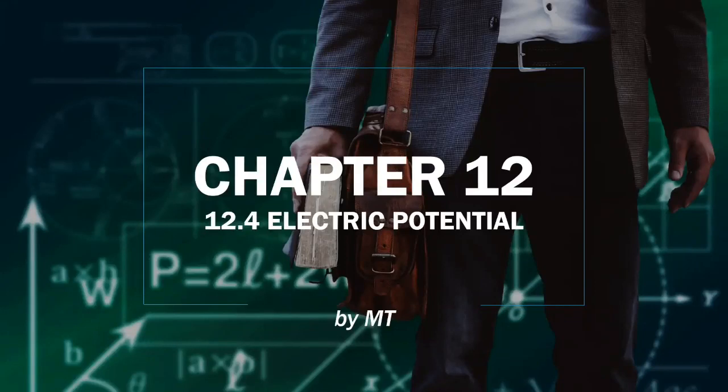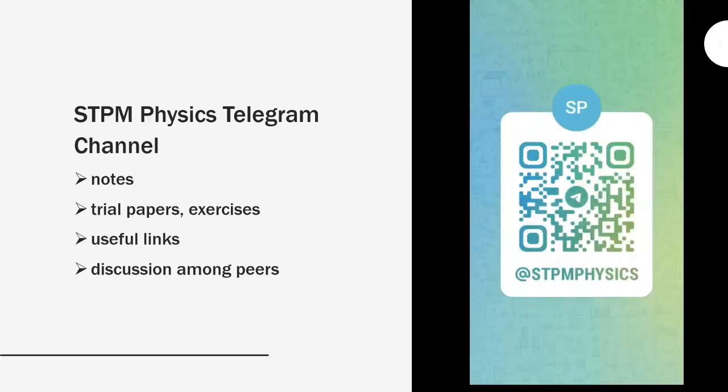Good day and welcome back. Today we're going to talk about the last chapter in electrostatics, which is electric potential. I'd like to share a Telegram channel which has notes, dry runs, and some useful links for SPM physics students. You can discuss with your peers on the channel and join the group by scanning the card or using the link in the description below.